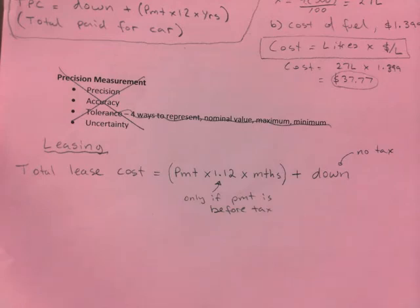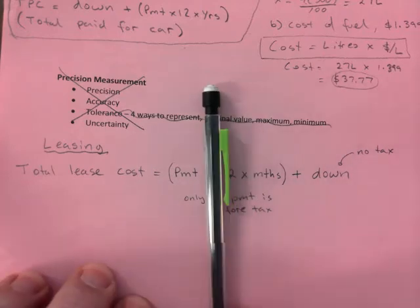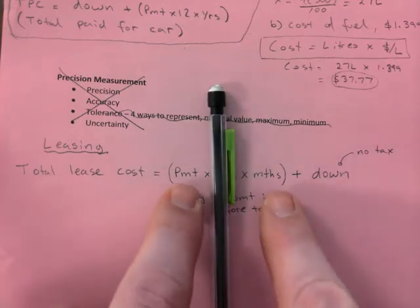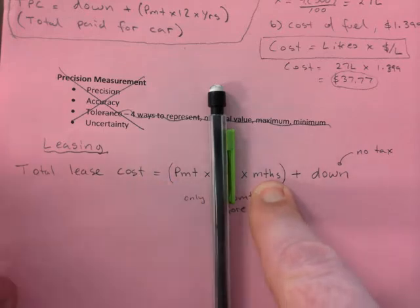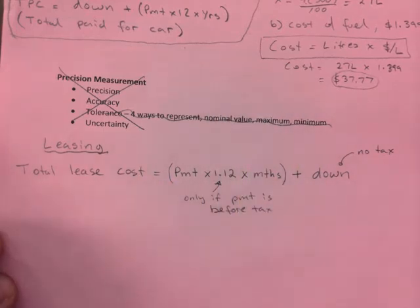Only if payment is before tax. That is very important. Don't just go ahead and times everything by 1.12. It's only if the question says it's 250 plus tax or something. That is telling you that you need to add taxes. If it's saying 250 including taxes, do not do times 1.12. Because that 250 already includes taxes. So, you'd basically omit that 1.12 step and just take your payment multiplied by the months.